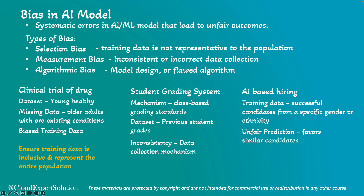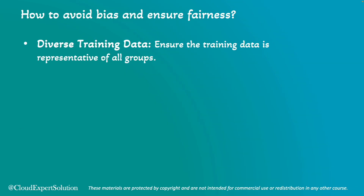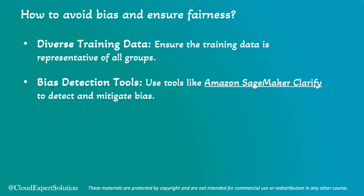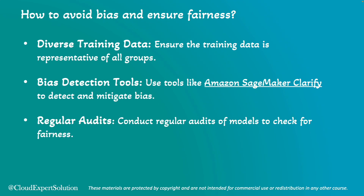To mitigate selection bias, we need to ensure our training data is inclusive and represents the entire population. For measurement bias, we need to collect accurate and consistent data. To avoid algorithmic bias, we need to design and train the model to avoid perpetuating existing biases. We can also use bias detection tools like Amazon SageMaker Clarify to detect and mitigate bias — we have an entire module on this. Additionally, we can conduct regular audits of our models to check for fairness and perform feature engineering to increase the number of features.